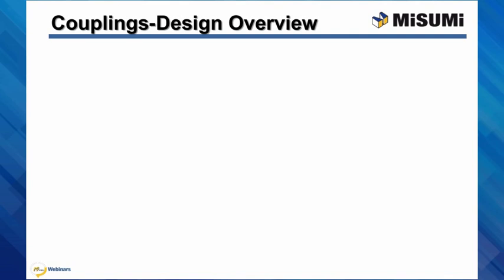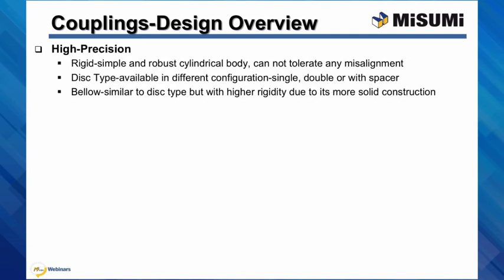When it comes to coupling design, high precision couplings come in different designs. We have rigid couplings that have a simple and robust cylindrical body — easily installed on shafts but cannot tolerate any misalignment. We have disc type, available in different configurations: single, double, or double with a spacer. The choice of configuration enables different amounts of misalignment to be accommodated, but through increased flexibility the coupling loses torsional rigidity. In this group we also include bellow couplings, which have a similar design to disc type but higher rigidity due to their more solid construction.